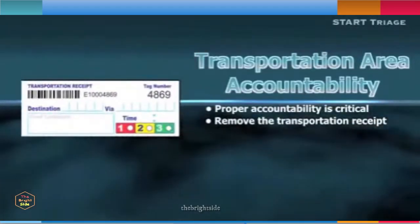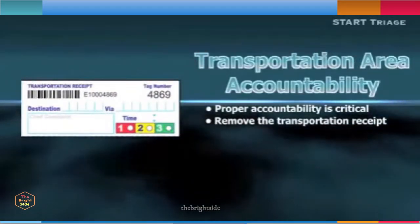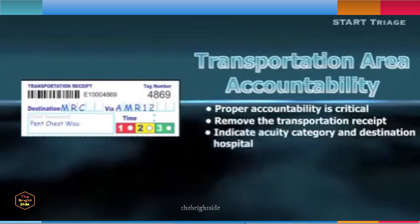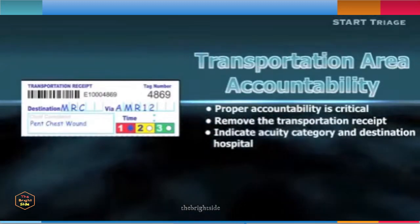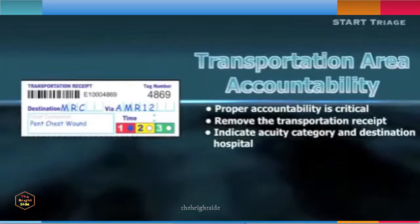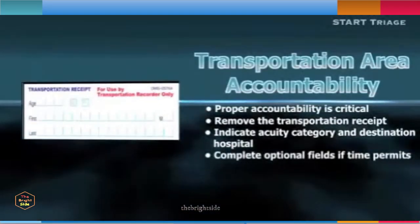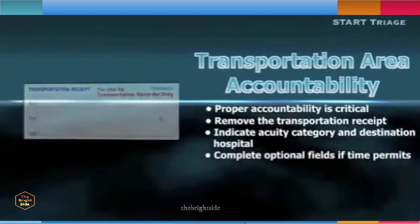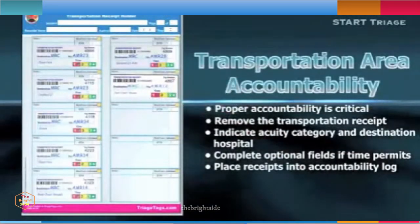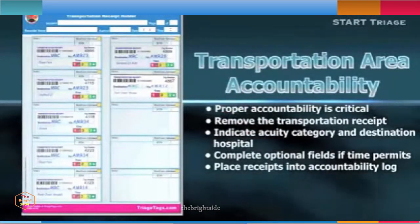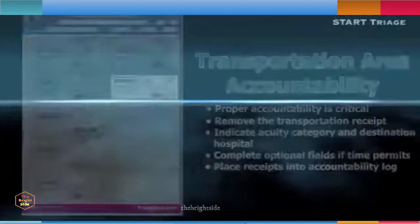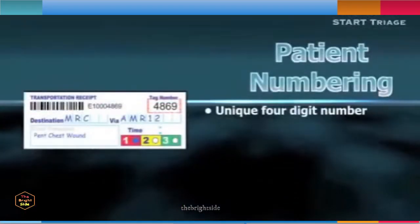Mandatory fields on the transportation receipt, such as acuity category and destination hospital, must be completed. Optional fields on the back of the transportation receipt are available. If completed, transportation receipts are placed in an accountability log for quick reference if needed and for post-incident reporting.